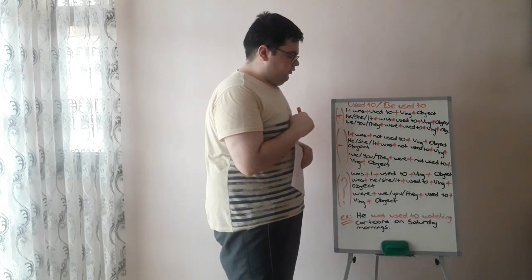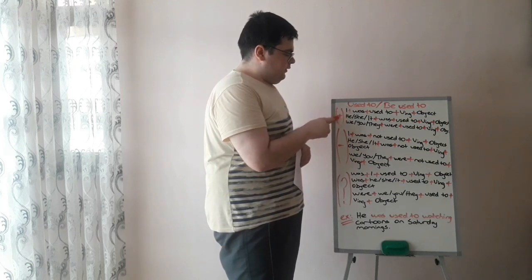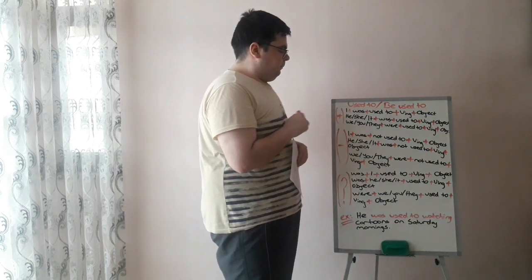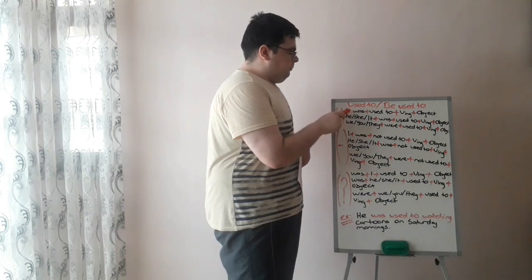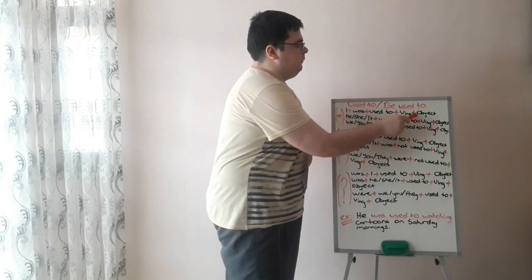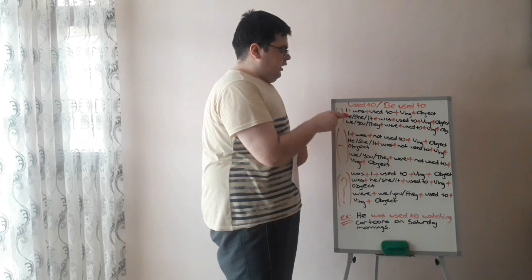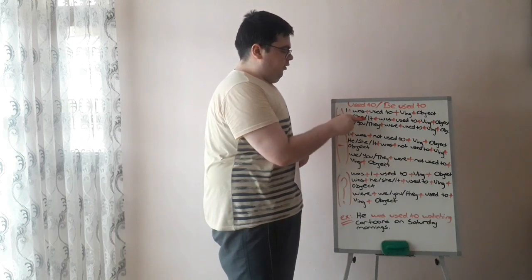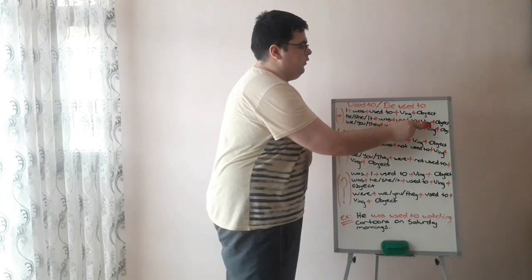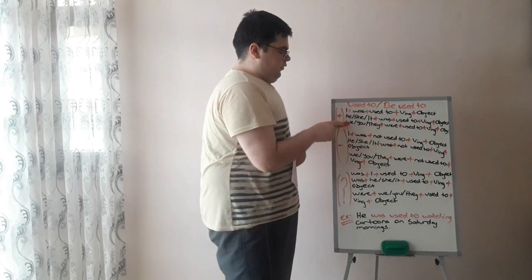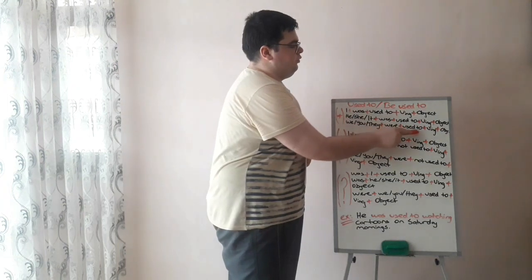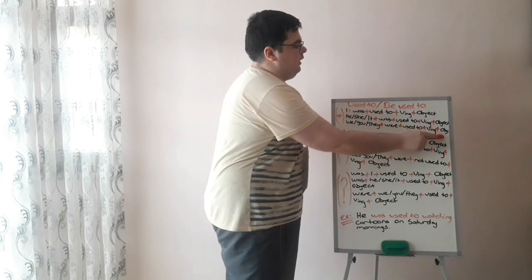Let's look at our structures — first positive, then negative, and then question. For positive: I plus was, plus used to, plus verb-ing, plus object. He, she, or it plus was, plus used to, plus verb-ing, plus object. We, you, or they plus were, plus used to, plus verb-ing, plus object.